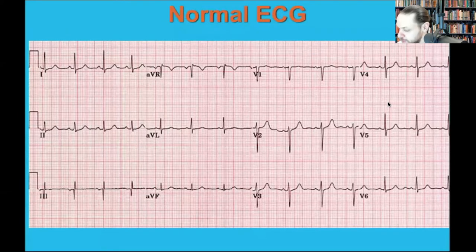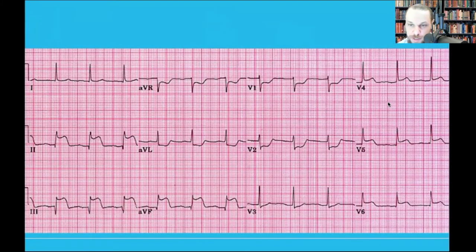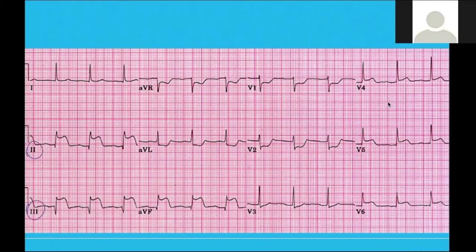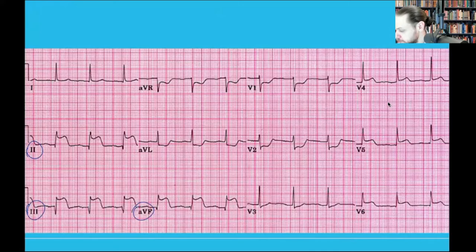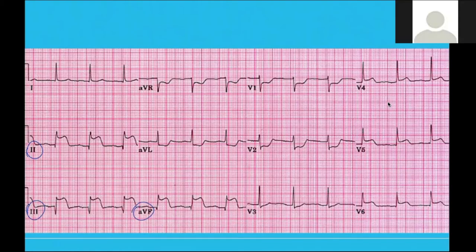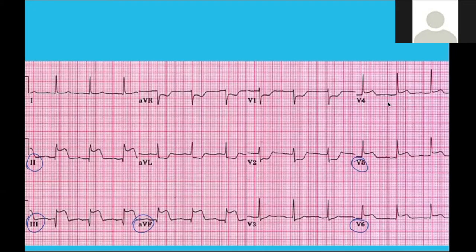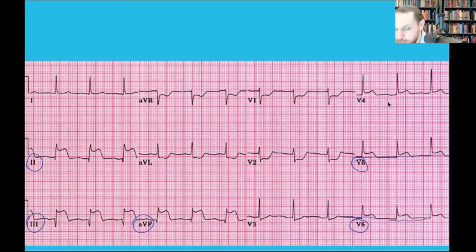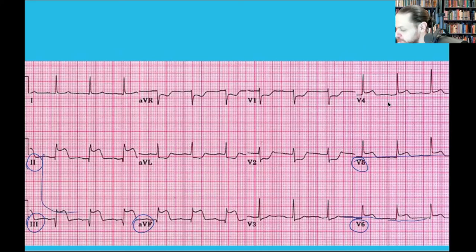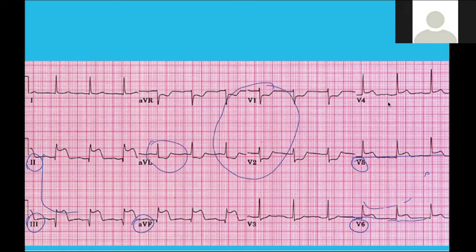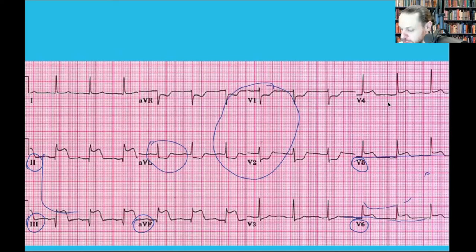Here's a normal EKG — no elevations in any leads. Now this next EKG: where do you see elevations? Leads II, III, aVF — and also V5, V6. All of those are elevated. You also have reciprocal changes — the opposite side showing depressions. You see the posterior wall showing depressions. This is pathognomonic of a STEMI.